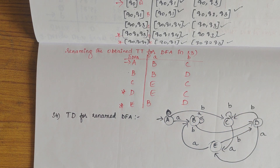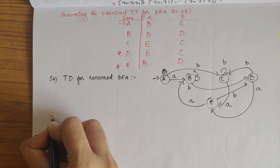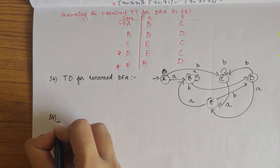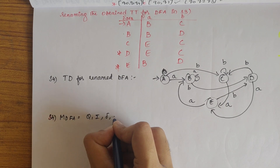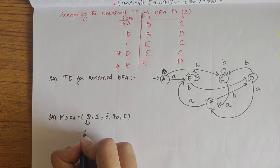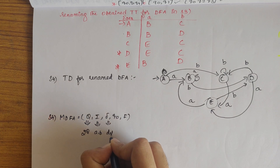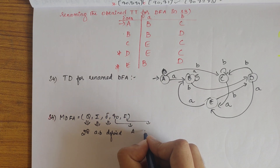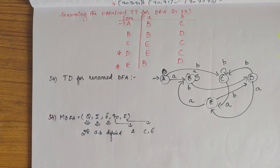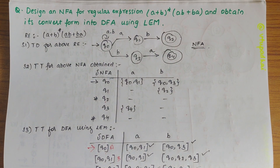Our next step is to formally define the DFA: M = (Q, Sigma, transition function, Q0, F), where Q is 2^Q, Sigma is {A, B}, the transition function is as defined, Q0 (the start state) is A, and F (the set of final or accepting states) is {C, E}. I hope you have understood how to solve this. If you have any doubts, let me know in the comments and subscribe to my channel. Thank you.